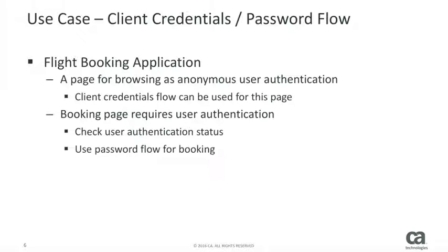Using mobile SDK, I can use the client credentials flow — which is an anonymous authentication — for the page where users are browsing flight schedules. And once the user selects and tries to book the flight, I can check the user authentication status and prompt the login dialog if the session was not authenticated against the user. By doing so, the mobile application I built is fully secure even for browsing flights, which does not require user authentication, as well as controlling the user authentication for a specific action.